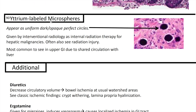Next up we've got yttrium-labeled microspheres. They appear as uniform, dark, opaque, perfect circles. They are given by interventional radiology as internal radiation therapy for hepatic malignancies. You often also see radiation injury, and this is most common in the upper GI due to shared circulation with the liver.